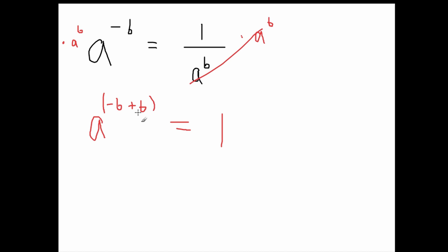Now negative b plus b will equal 0. So a to the 0 equals 1. And we know that any number raised to the 0th power will always equal 1. So then we know 1 equals 1.